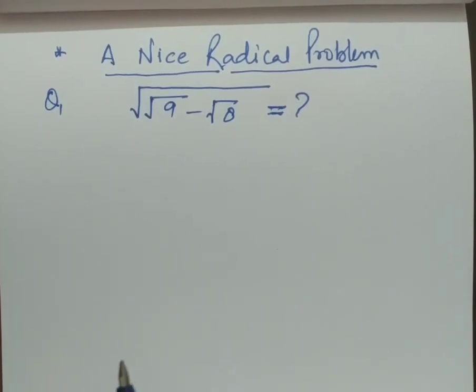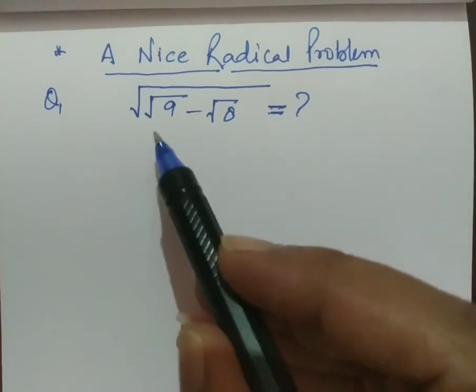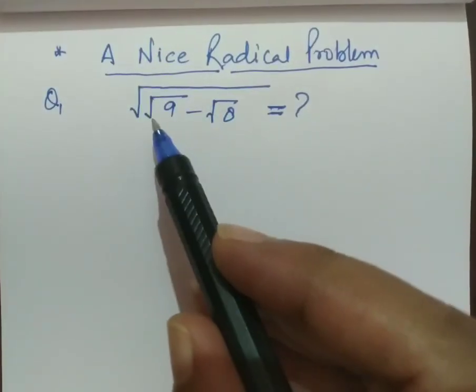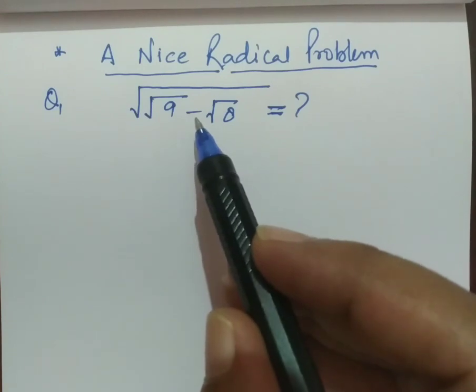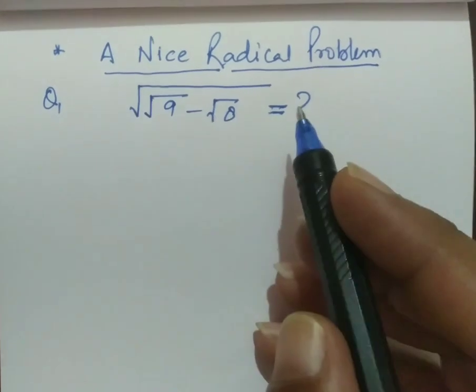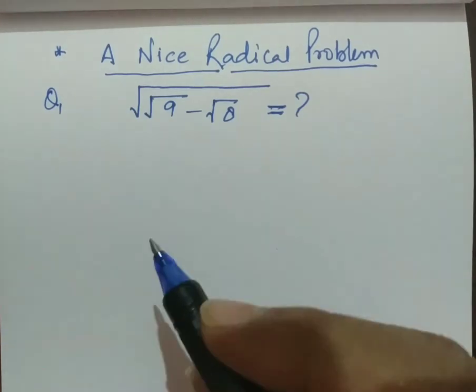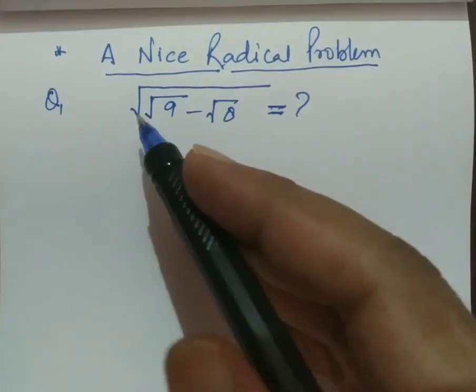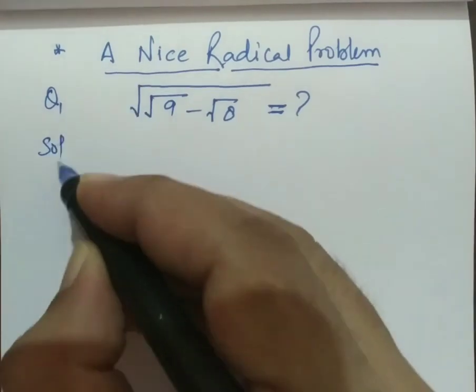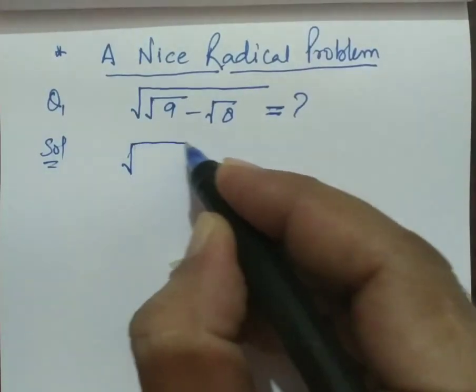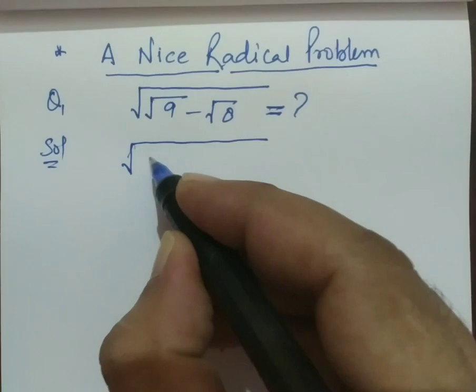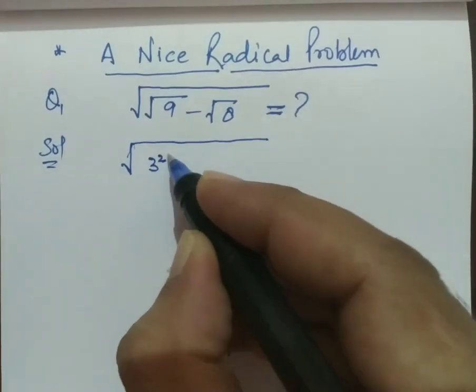Hi everyone, today we have a very nice radical problem: square root of square root of 9 minus square root of 8 equals what? So let's begin the solution. Now we can write the square of 3.